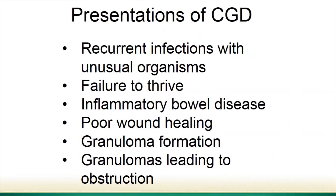So how do patients with CGD present? They can present in many ways, but the most common are recurrent infections — or even a single infection with an unusual organism. Those infections are often life-threatening, or very deep, meaning in organs of the body such as the liver or bone, or even bloodborne infections. Children often have failure to thrive — not gaining weight or height like their counterparts. Patients can also present with inflammatory bowel disease, which Dr. Zerbe will discuss later.